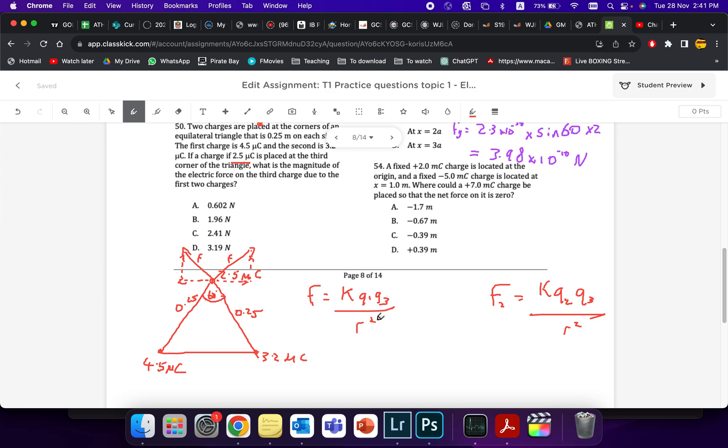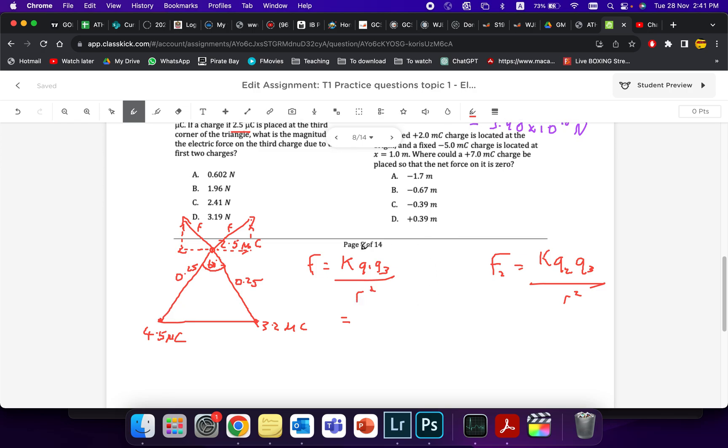So, putting the values in, if I was to do Q1 and Q3, I would get this number. So, I'm not going to write it out. I'm going to ask you to write it out if you want to do it. I'll write 9 times 10 to the 9 multiplied by 4.5 times 10 to the minus 6 multiplied by 2.5 times 10 to the minus 6. So, these are the values. Divide that by 0.25 squared. By doing that, you will get 1.6182 newtons.